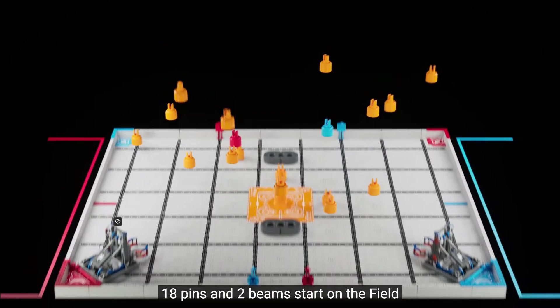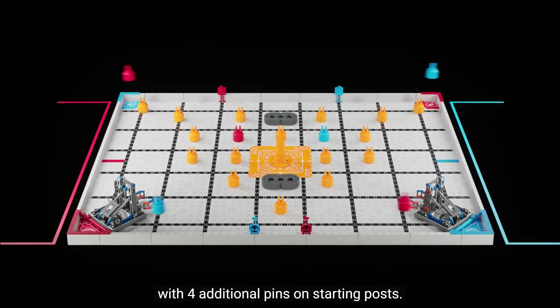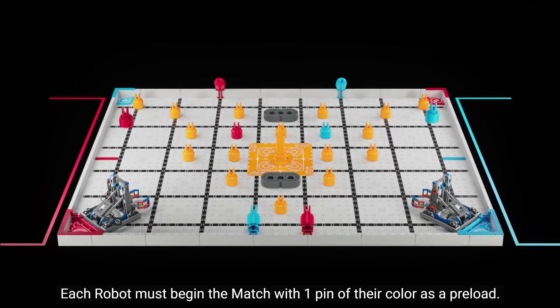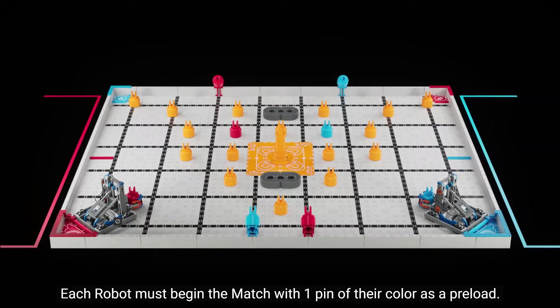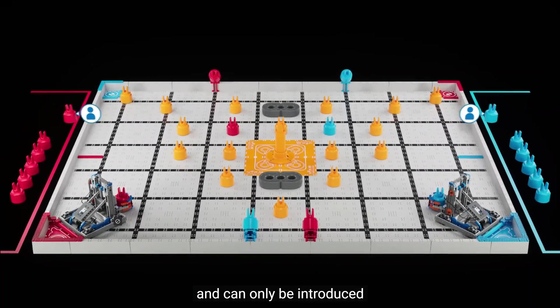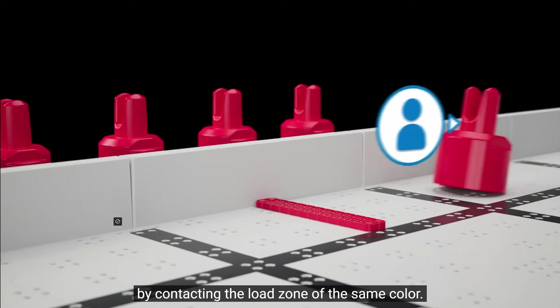18 pins and two beams start on the field with four additional pins on starting posts. Each robot must begin the match with one pin of their color as a preload. 12 pins are reserved for human loaders and can only be introduced by contacting a load zone of the same color.